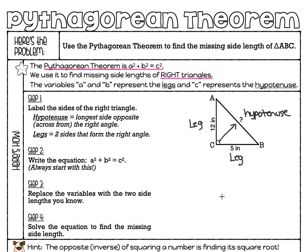Any time we're finding a missing side using the Pythagorean Theorem, the first thing is always to write the equation: A squared plus B squared equals C squared. Always start with that. Then we're going to fill in the values that we have — replace the variables with the two side lengths that you know. The legs are always going to go in the A and the B place. I've got a 5 and a 12; it doesn't matter what order I put them in. What I can't do is put the 12 or the 5 in place of C, because C is always the hypotenuse.